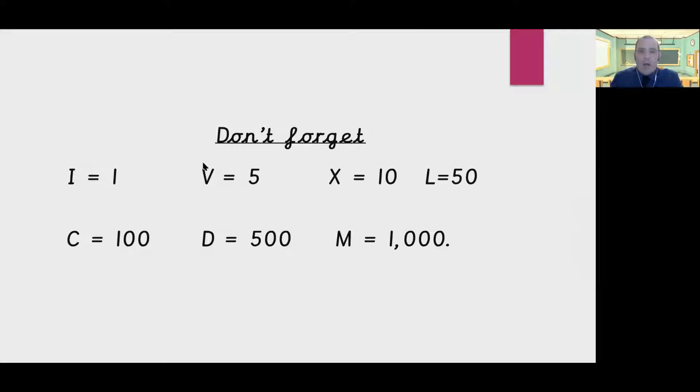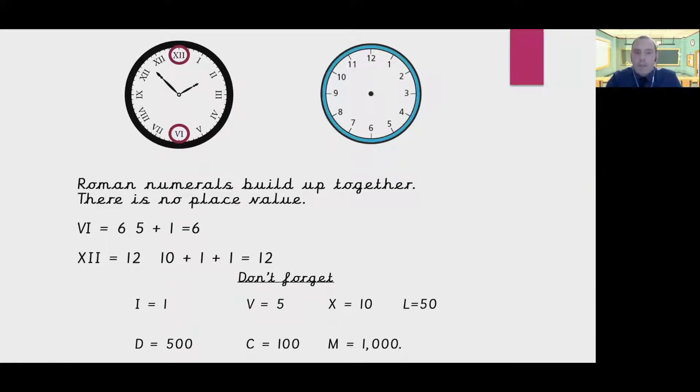So to help us start understanding how they work, we're going to use a clock. Roman numerals don't have place value, they build up together. If we look on our Roman numeral clock on the left and look at the bottom number that I've circled, VI, we look on a normal clock face and we can see that's 6. So we build up the number, so VI is worth 6 and it means 5 plus 1. XII, the other number I've circled, is at the top of our clock face and we know that is 12. So XII is 12 and that would be 10 plus 1 plus 1 to give us 12.